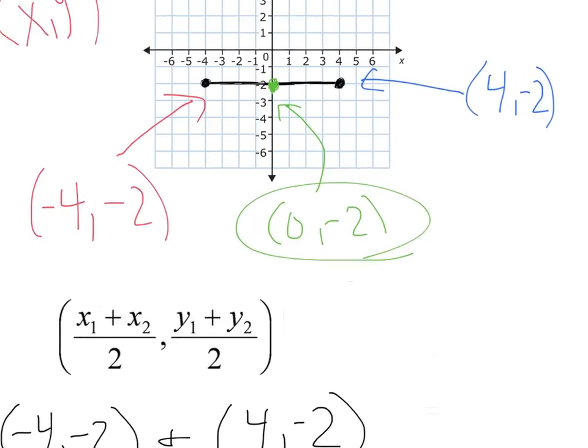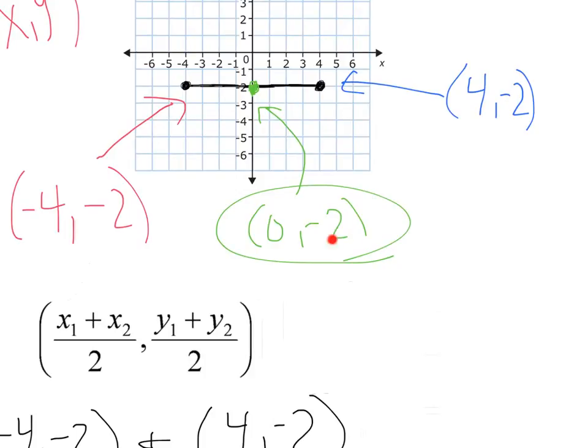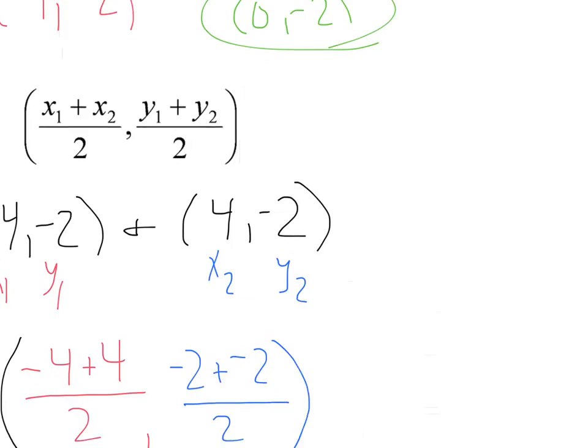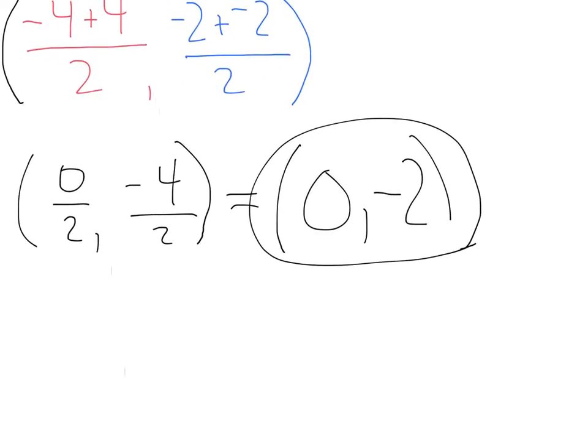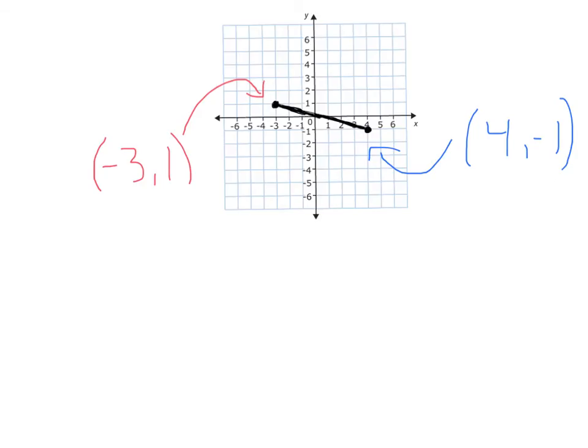And we've got the same point that we found before, just by looking 0, negative 2. And here we have the midpoint, 0, negative 2. So, it works. Perfect. Let's try another one.